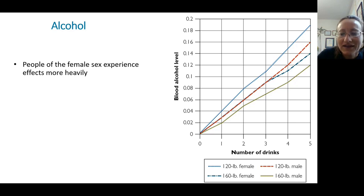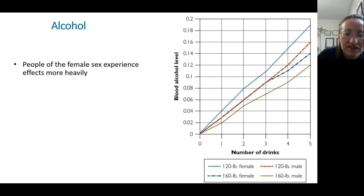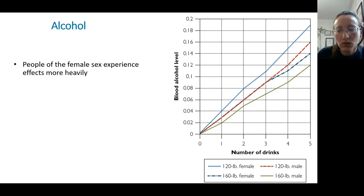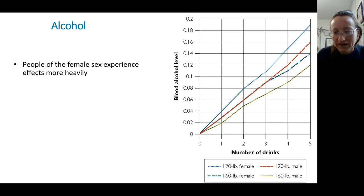So the lesson is that the same amount of drinks hits a female person harder than a male person, even if they weigh the same. If you compare body composition, the female person has more fat and the male person has more muscle, and there are also differences in digestive enzymes.